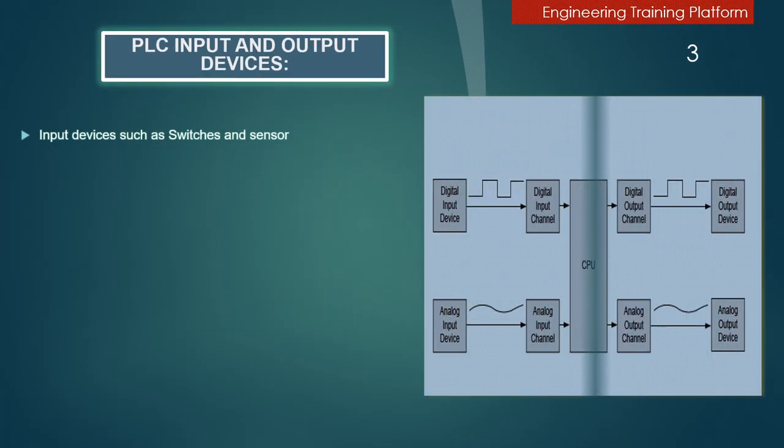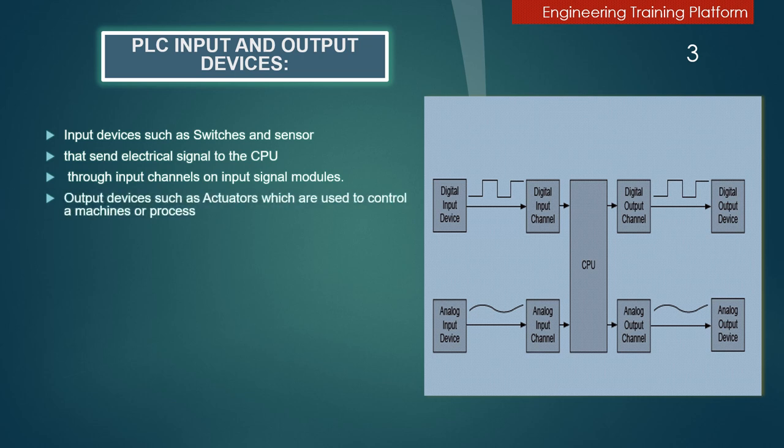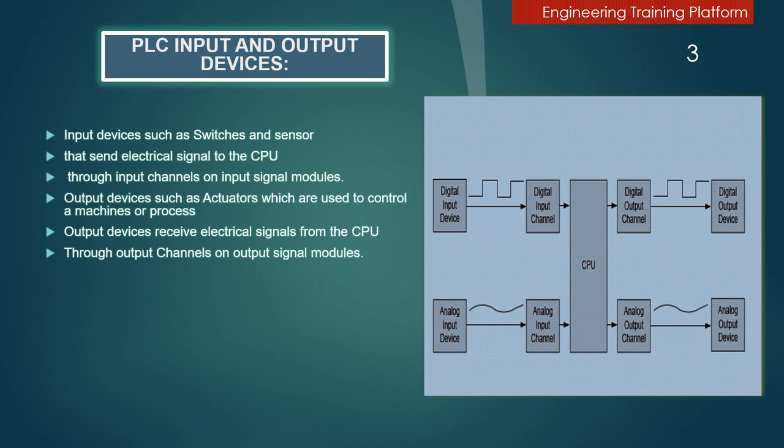Starting from PLC Input and Output Devices. Input Devices such as switches and sensors send electrical signals to the CPU through input channels on input signal modules. Output Devices such as actuators are used to control a machine or process. Output Devices receive electrical signals from the CPU through output channels on output signal modules.